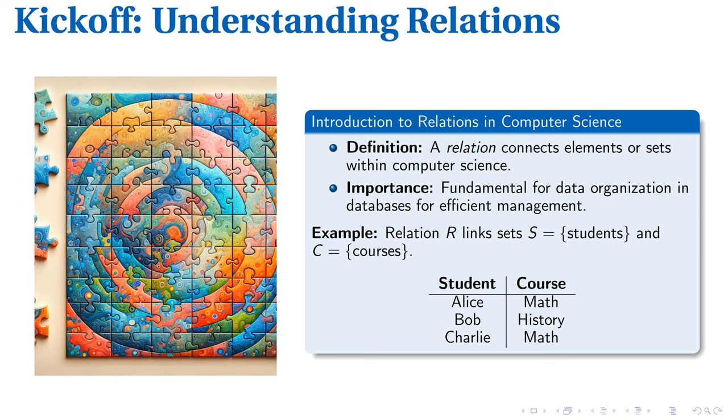They offer a simplified way to structure databases. Consider an example where a relation R establishes a link between sets S representing students and C symbolizing their corresponding courses.